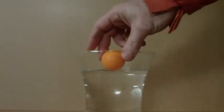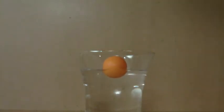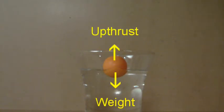Likewise, in order for this ping pong ball to float on the water, the forces acting on it must be balanced. The weight acting downwards due to gravity must be exactly balanced by the upthrust, acting in the opposite direction.